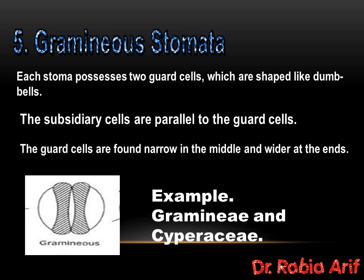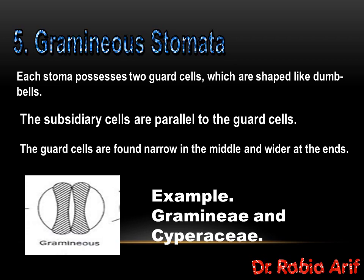The fifth type is the graminaceous stomata. As the name indicates, these stomata are present in the Gramineae family. These stomata possess two guard cells which are shaped like dumbbells — the guard cells look like a dumbbell shape, narrow in the middle and wider at the ends, while the subsidiary cells are parallel to the guard cells. So they are dumbbell-shaped graminaceous stomata, classified based on the shape of the guard cells. Examples are the Gramineae and Cyperaceae families.